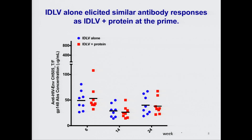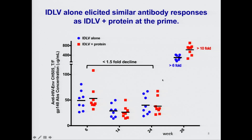We first compared the antibody responses induced by IDLV alone and IDLV plus protein. Surprisingly, at the peak post-prime, we didn't see any difference in the magnitude of antibody response between IDLV alone (in blue) and IDLV plus protein (in red). The antibody titers slowly declined over time, with less than a 1.5-fold decline at six months post-immunization. After the second immunization with the week-53 envelope, we had a higher than six-fold increase in antibody titers for the IDLV plus protein group.